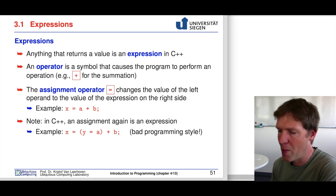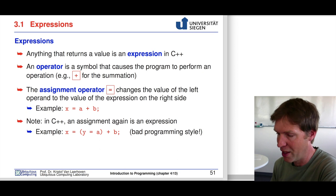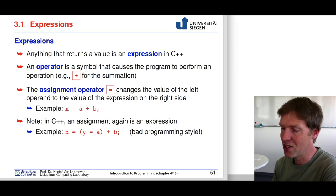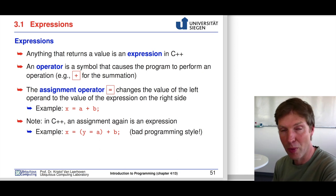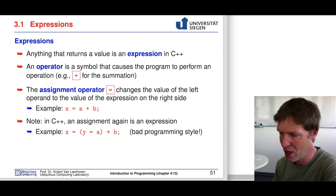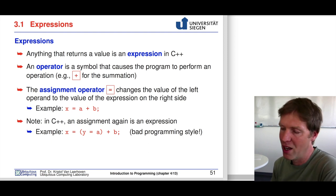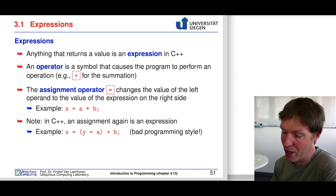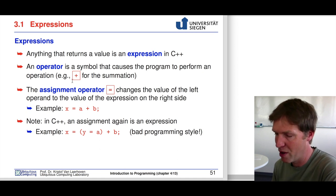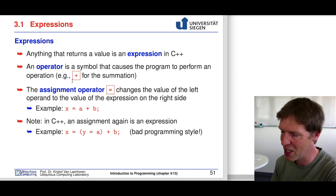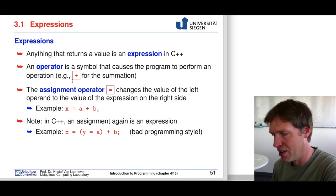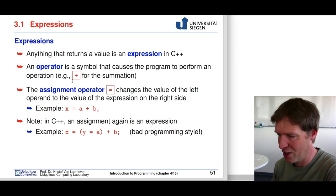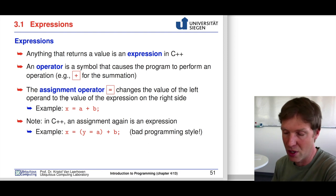Expressions in C and C++ always return a value. Anything that happens in your program and returns a value after it executes is called an expression. One good example is an operator — we saw some examples in the previous slides — and this causes the program to do something and return a value, so this is an expression.